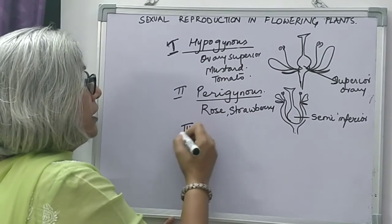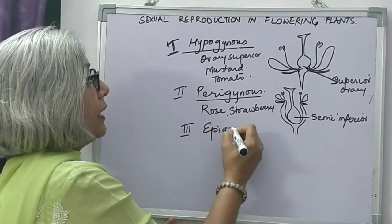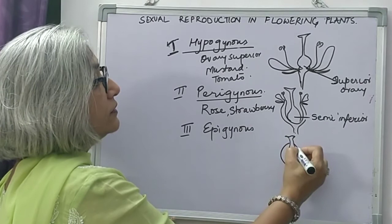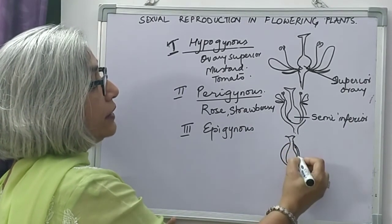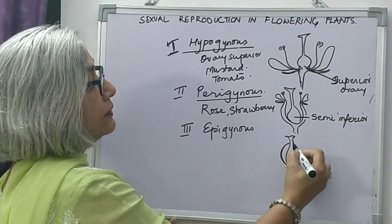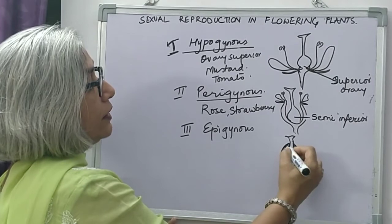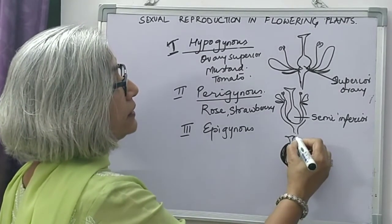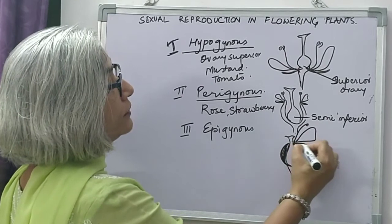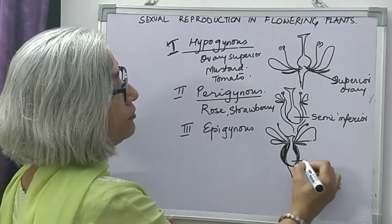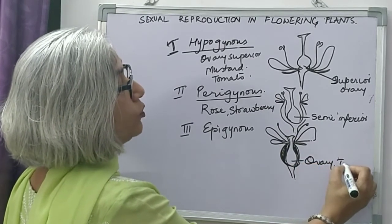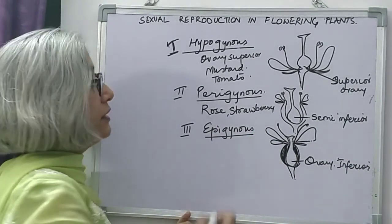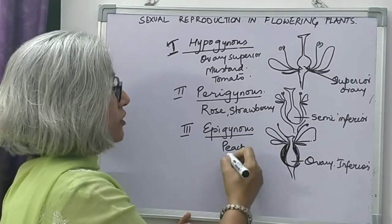The third condition is called epigynous. Here the ovary is completely enclosed in the thalamus, and all the other floral parts arise above the ovary. So in this case the ovary is said to be inferior. This condition is called epigynous and we see this in peach and apple.